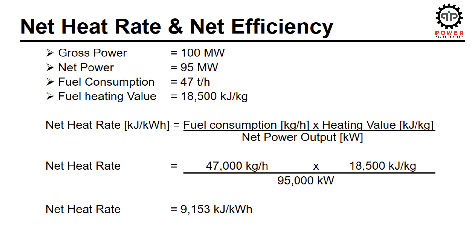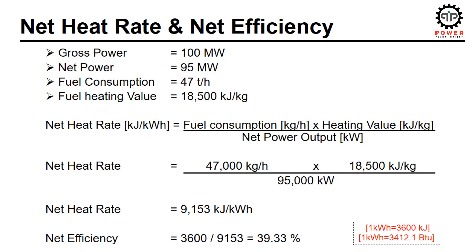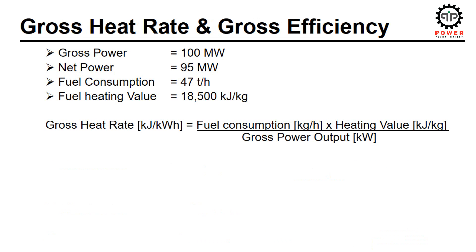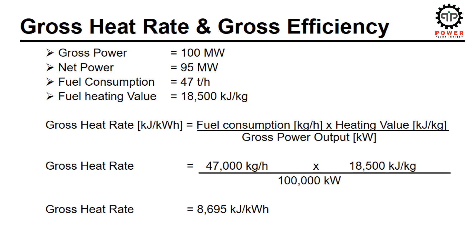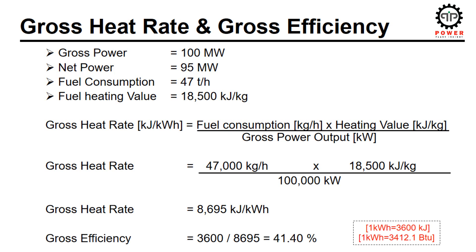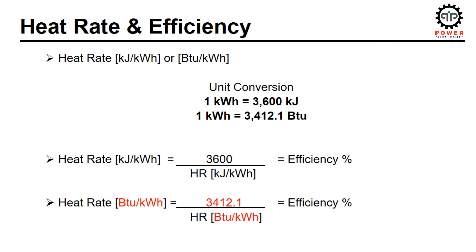For calculating net efficiency, 3600 is divided by the net heat rate of 9153, giving the efficiency number. For calculating gross heat rate, the value of gross power is used in the denominator to get the gross heat rate figure. For gross efficiency, 3600 is again divided by the gross heat rate. In these calculations, 3600 is used because the heat rate units are in SI units — kJ per kWh. If the heat rate were in BTU per kWh, we would use 3412.1 instead of 3600.